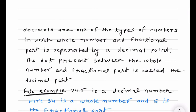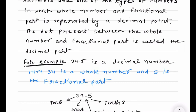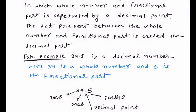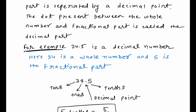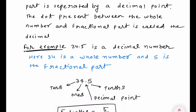Decimals are one of the types of numbers in which a whole number and fraction part is separated by a decimal point. There will be a whole part and there will be a fraction part. The dot present between the whole number and fraction part is called the decimal point.